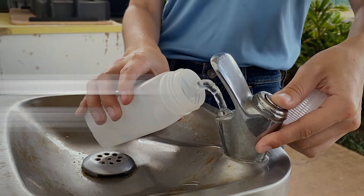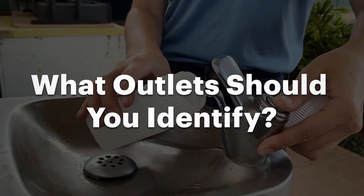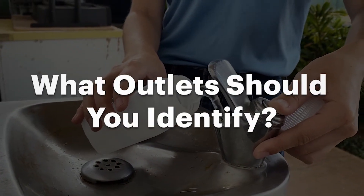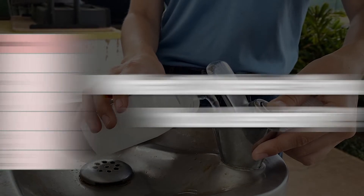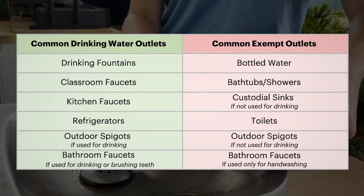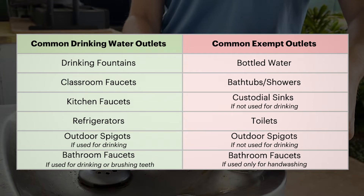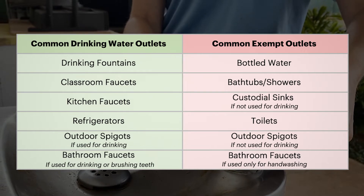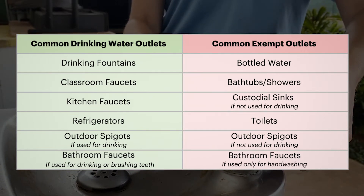So, what outlets should you identify? State law requires the testing of every location used for drinking or food preparation. This table provides an overview of common drinking water outlets. Don't forget sinks used to fill up coffee pots or spigots used to fill sports jugs on the playground. It's critical to identify every outlet used at your facility because lead levels can vary greatly between fixtures.